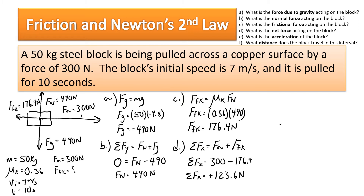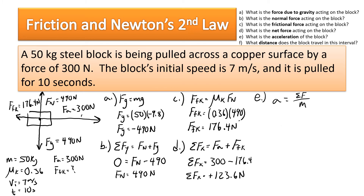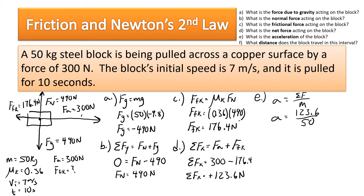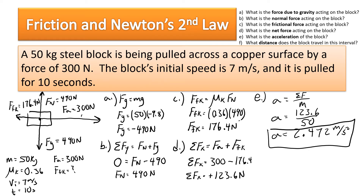Part E asks for the acceleration of the block. Now that we know the net force and the mass, we use Newton's second law. The net force in the Y direction is zero, so it doesn't affect the overall net force — it's still 123.6 Newtons. Dividing by 50 kilograms gives an acceleration of 2.472 meters per second squared. I'll keep the full decimal in the calculator for use in the next part.